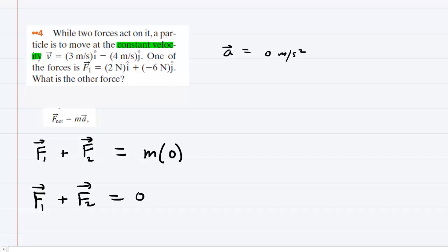So to find this other force, we simply subtract F1 from both sides of this equation. And we can come over here with the result. We can see that the unknown force F2 is simply the negative of the given force F1.